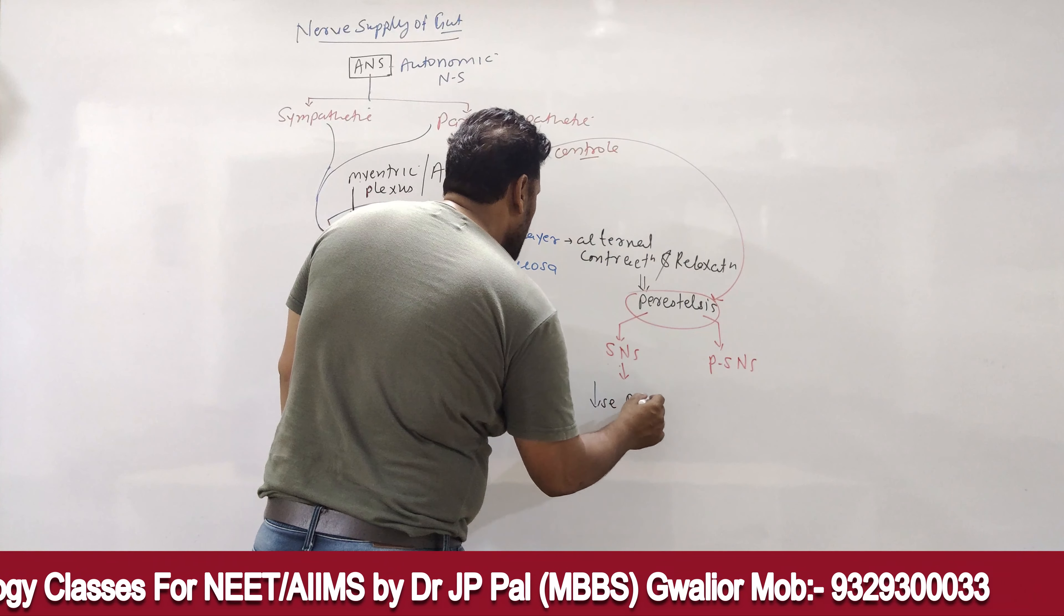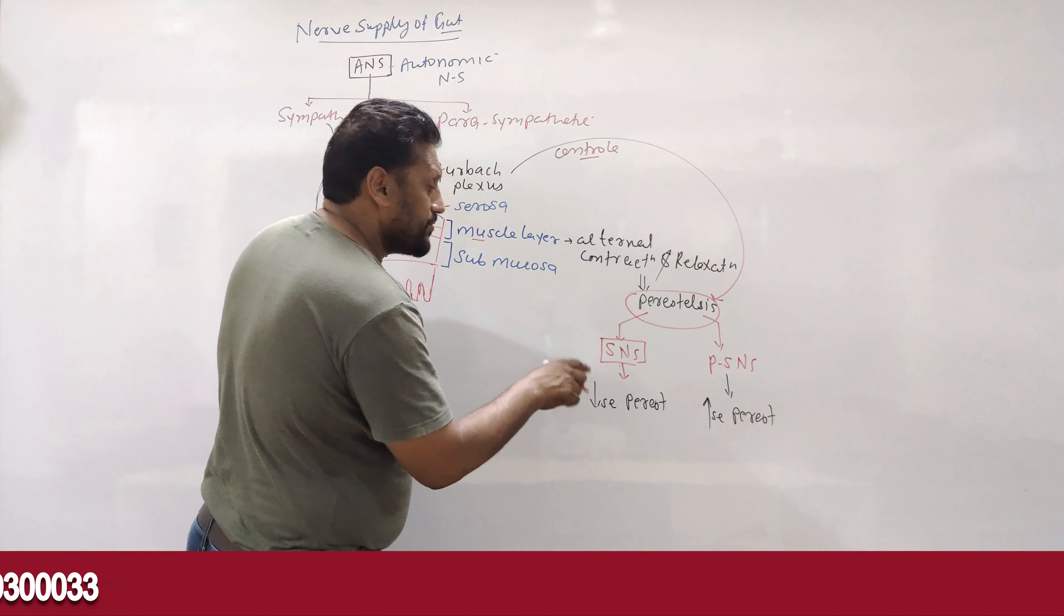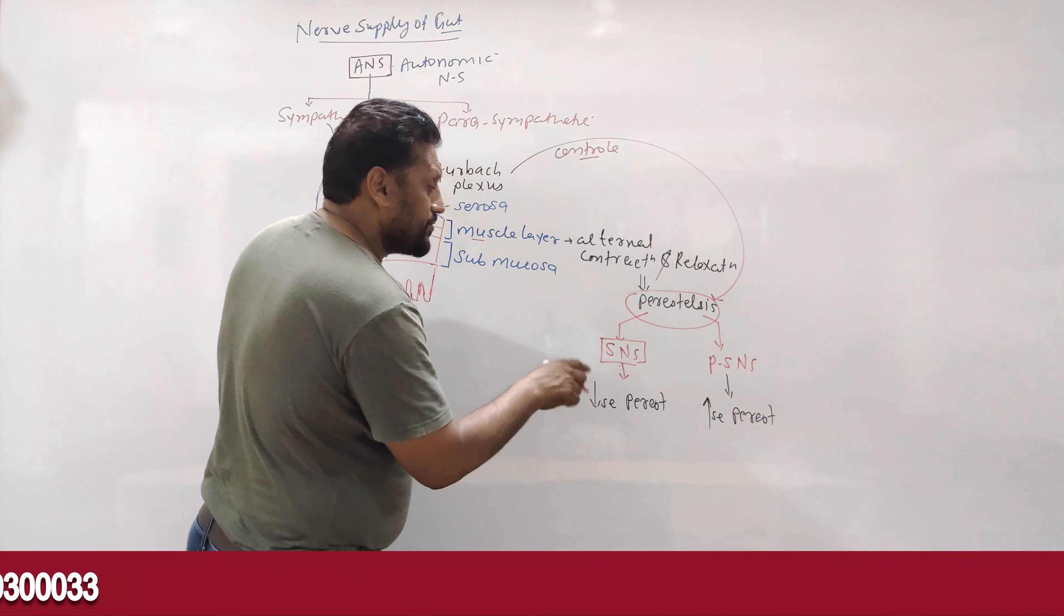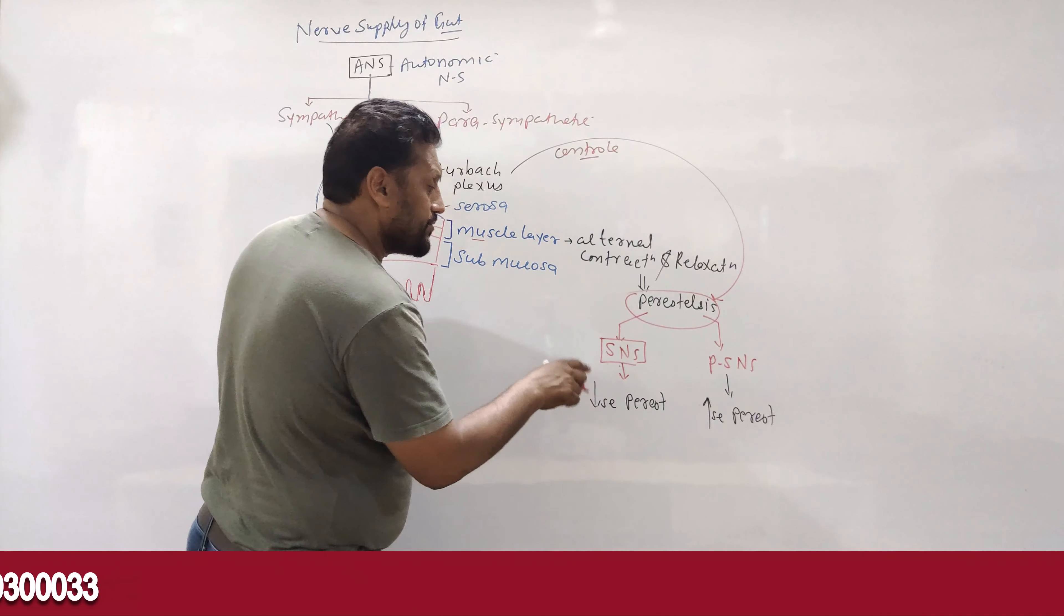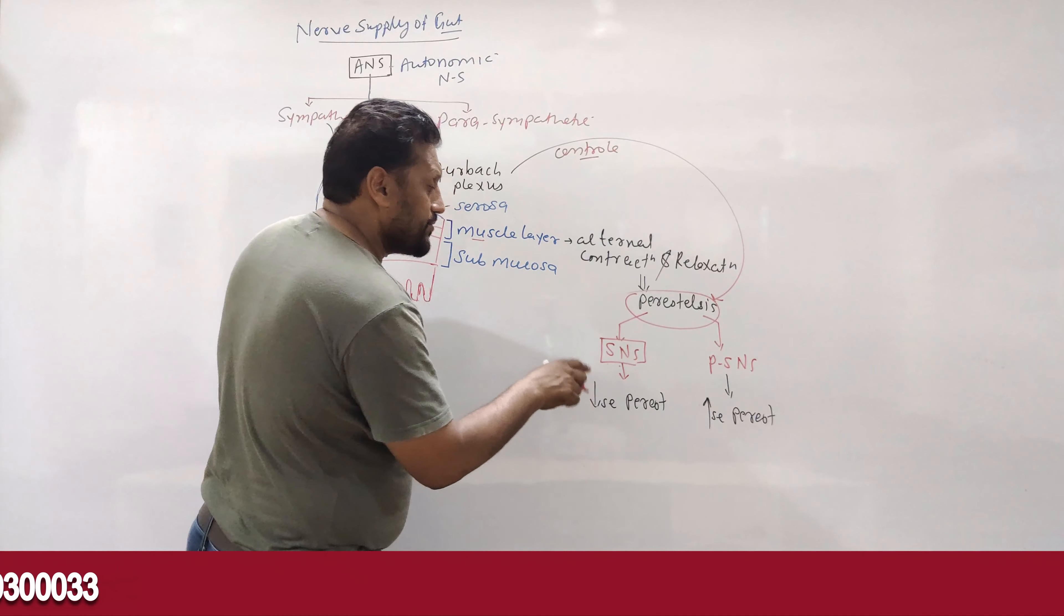If you want to talk about sympathetic or parasympathetic, PSNS means parasympathetic nervous system and sympathetic nervous system means SNS. Sympathetic stimulates, parasympathetic decreases the parasympathetic and increase the parasympathetic.